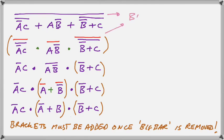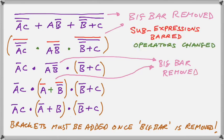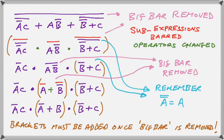Finally, we see that the big bars have been removed wherever they go over more than one letter. Sub-expressions are in red and the operators are in green, just as we did in the last video. And finally, the rule that allows us to remove the double bars is a bar bar equal to a.